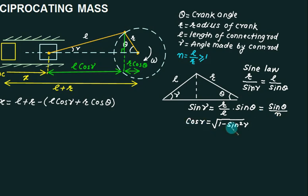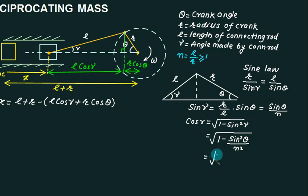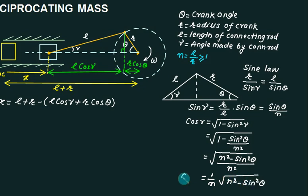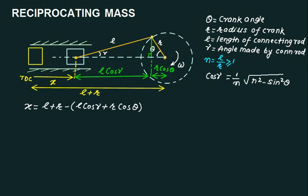cos(γ) equals the square root of one minus sine²(γ), which equals the square root of one minus sine²(θ) divided by N². Taking N² common inside the root gives (1/N) times the square root of N² minus sine²(θ). Now replacing L with N·R in the displacement equation, L·cos(γ) becomes N·R times (1/N)·√(N²−sin²θ), which simplifies the expression.